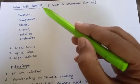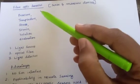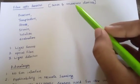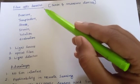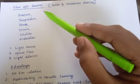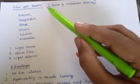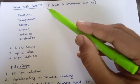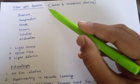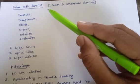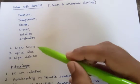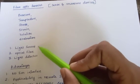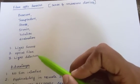Fiber optic sensors include: Temperature Sensor, Displacement Sensor, Force Sensor, Liquid Level Detector, Light Sensor, Optical Fiber, and Light Detector.